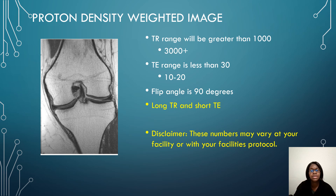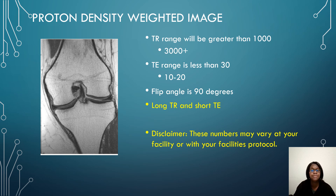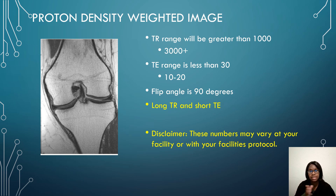For your proton density weighted image, the TR range will be greater than 1000, probably around 3000. The TE range is less than 30, anywhere between 10 and 20. The flip angle will be at 90 degrees, and it uses a long TR and a short TE. Note that different facilities use different numbers, and these ranges can change with new research, so use them as a guide and estimate.